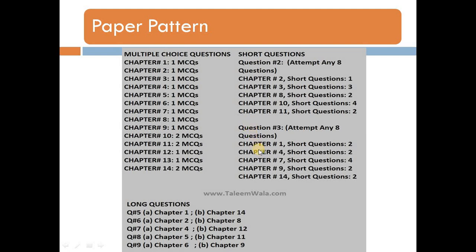Now let's look at the first year biology board paper pattern. The board pattern is shown on the screen. The theory paper has two parts: objective and subjective. The objective part has 17 MCQs worth 17 marks.